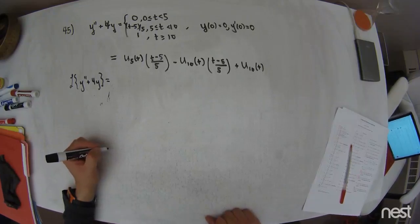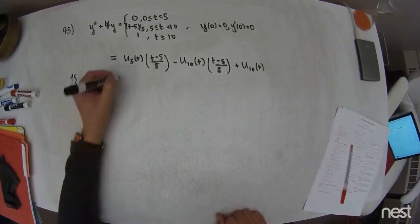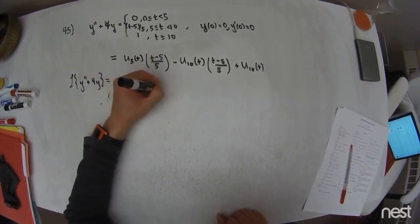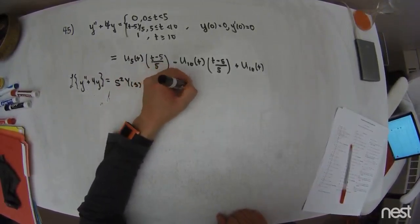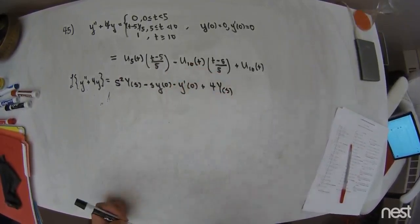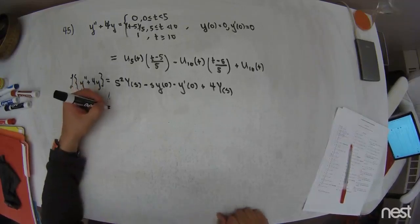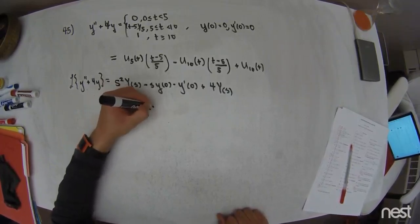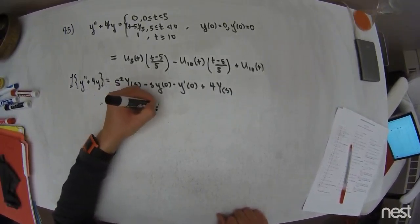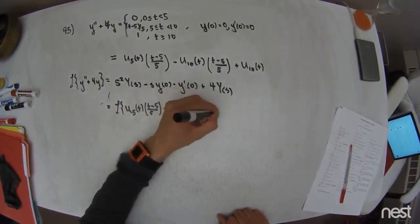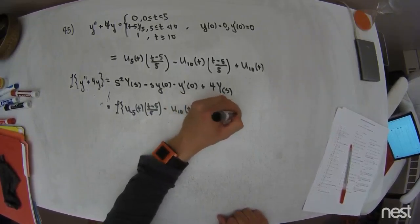I'm going to take the Laplace transform on both sides of the equation. The Laplace transform of the second derivative — table entry number 2 — is s² times Y(s) minus s times the first initial condition minus the y-prime initial condition. I add that to 4 times the Laplace transform, written as capital Y(s). On the right-hand side, I take the Laplace transform of u₅(t)·(t−5)/5 minus u₁₀(t)·(t−5)/5 plus u₁₀(t).